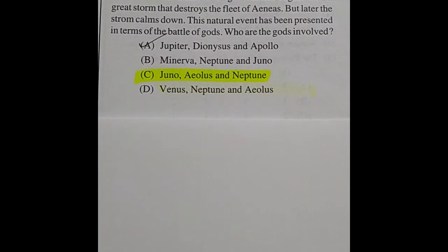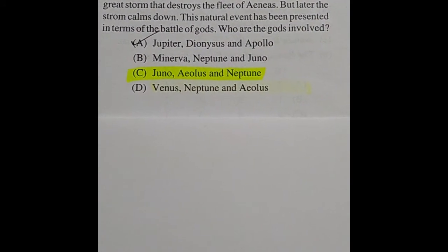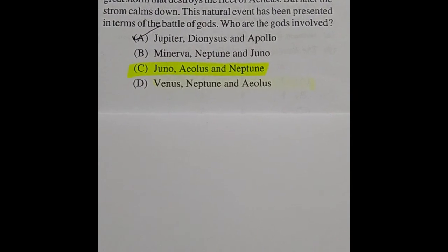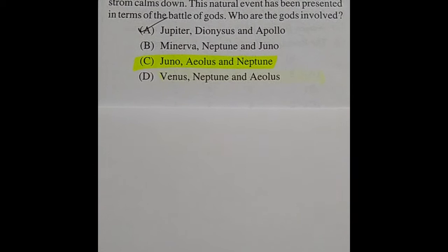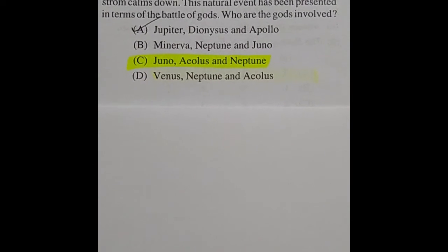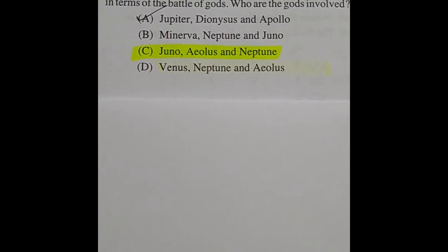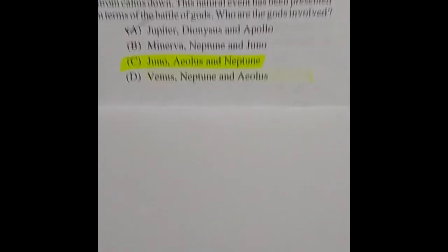Question 87: The first canto of Virgil's Aeneid begins with a great storm that destroys the fleet of Aeneas, but later the storm comes down. This natural event has been presented in terms of a battle of gods — who are the gods involved? The right answer is option C: Juno, Aeolus, and Neptune.